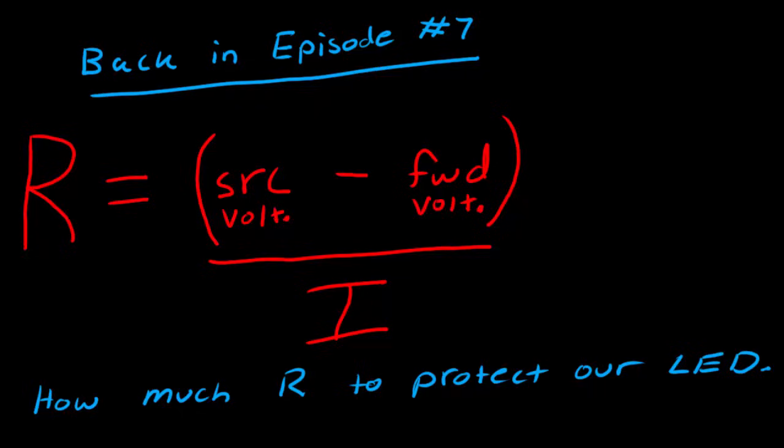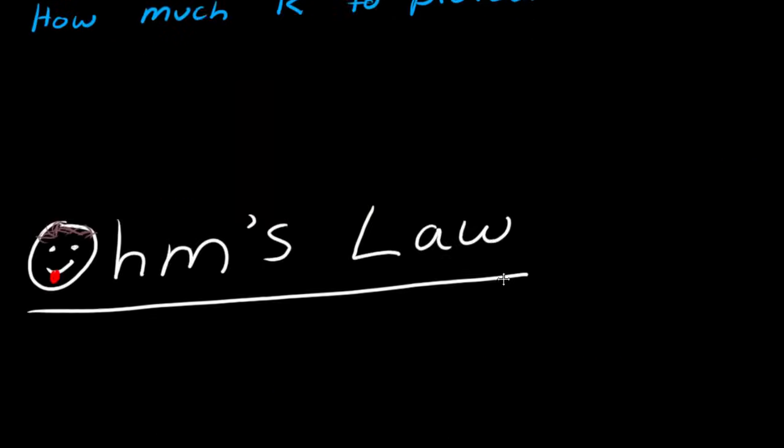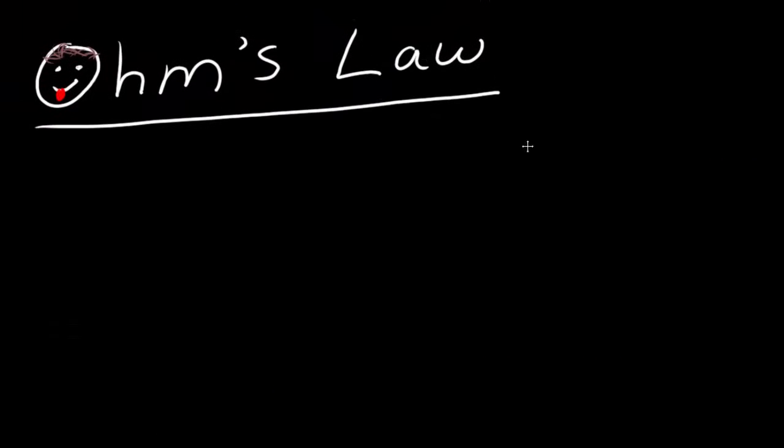Now this equation is actually a variation of one very important equation in electronics work. This equation is going to be the most important thing that you ever take out of this series, and that is called Ohm's Law. Now Ohm's Law is actually this equation right here. V equals I R. Voltage equals current times resistance.